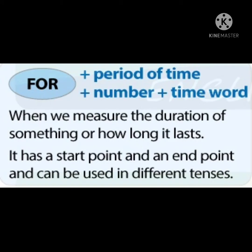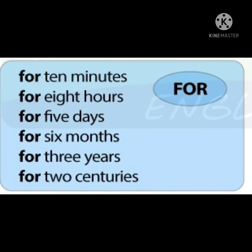'For' is used with a period of time — a number or time word. 'For' is used when we measure the duration of something, or how long it lasts. It has a start point and an end point and can be used in different tenses. For example: 'for 10 minutes' — it is not specific like 10 o'clock or 9 o'clock, it is just a duration of 10 minutes.